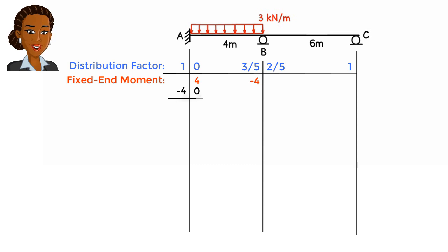To balance joint B, we multiply 4 by 3 fifths to get the moment value for the left column, and we multiply 4 by 2 fifths to determine the moment value for the right column. Now, we carry over half of 2.4 to the other side of member AB and half of 1.6 to the other side of member BC.